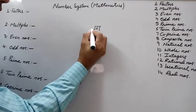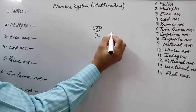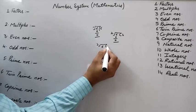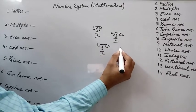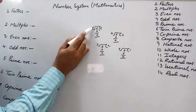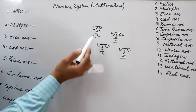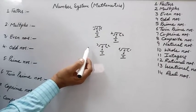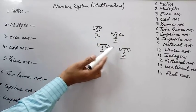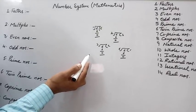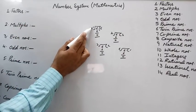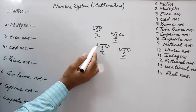Suppose we divide 6 by 1 — remainder is 0. Divide 6 by 2 — remainder is 0. Divide 6 by 3 — remainder is 0. Divide 6 by 6 — remainder is 0. So 1, 2, 3, and 6 divide 6 exactly or completely. These numbers are called factors of 6. Factors of a number are those numbers which divide the given number exactly or completely.